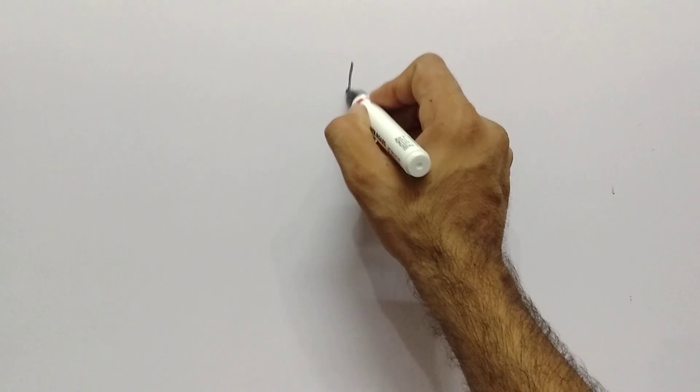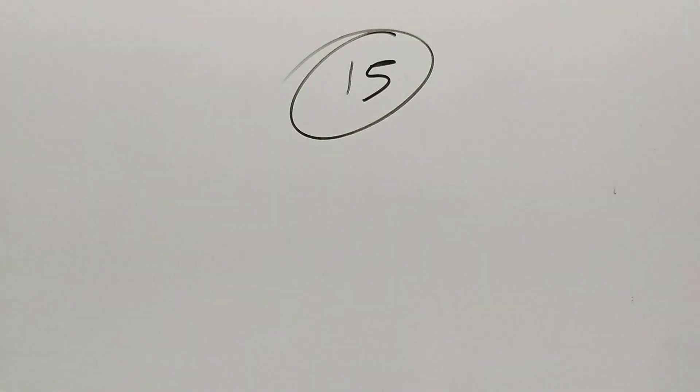So in this video we are going to learn the divisibility rule for 15. For example, the number is 225. Is this number exactly divisible by 15? We need to check this.